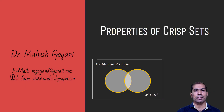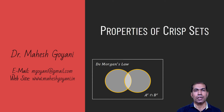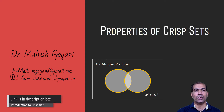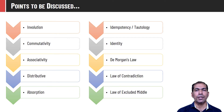Hello folks. Welcome to CodeCrafts. This is Mahesh Guyanne. In this video, I am going to talk about certain properties of crisp sets. If you don't know what a crisp set is, I have already made a video on introduction to crisp sets — please watch it first. The link is given in the description box. We will be talking about the following different properties of crisp sets: involution, commutativity, associativity, and so on. Let us start discussing them one by one.